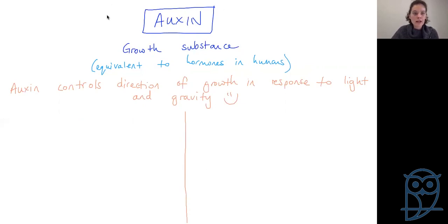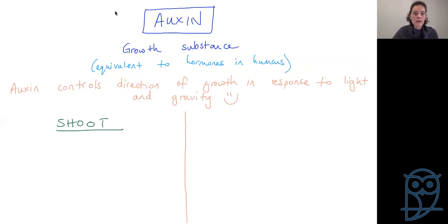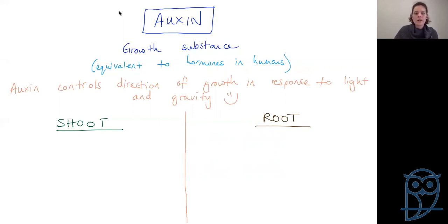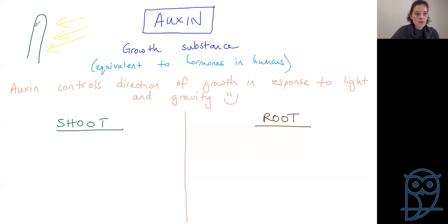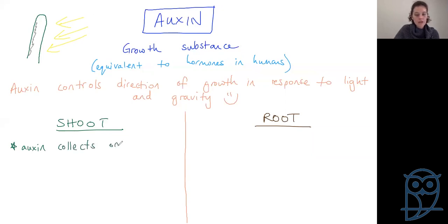Auxin in the root and auxin in the shoot are actually two different things. Let's look at the shoot first and compare it to the root. The shoot is the brand new baby growth — when we're talking about seedlings, the first seedling coming out; even older plants can get new shoots forming. What happens in the shoot is that auxin collects on the shady side. If the sunshine is coming from one side, the shady side is the other side — and that's where the auxin is going to collect.